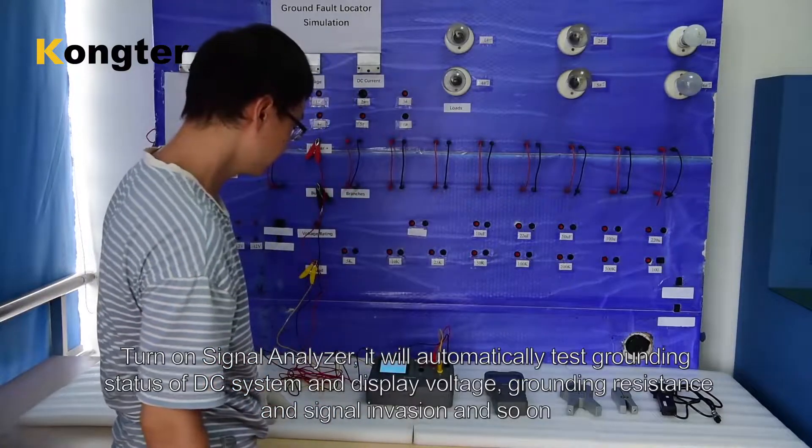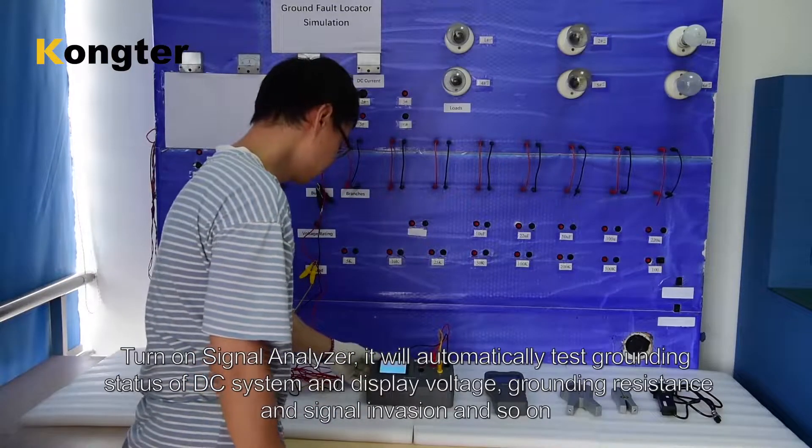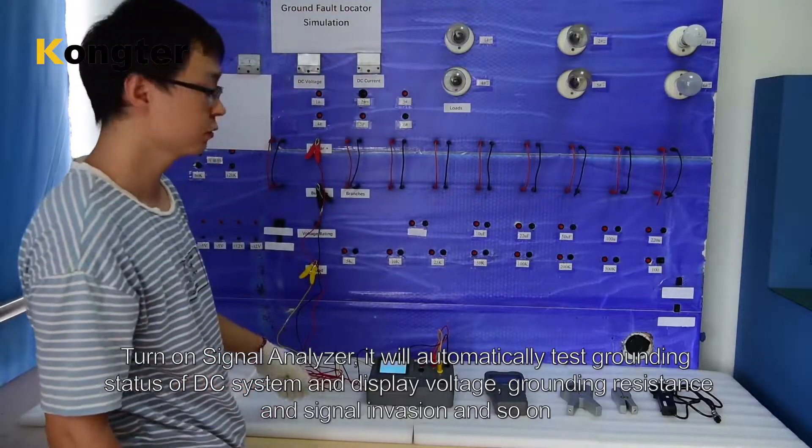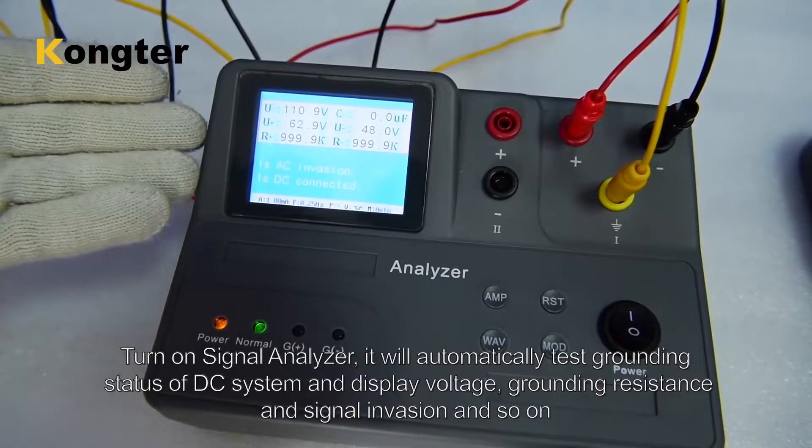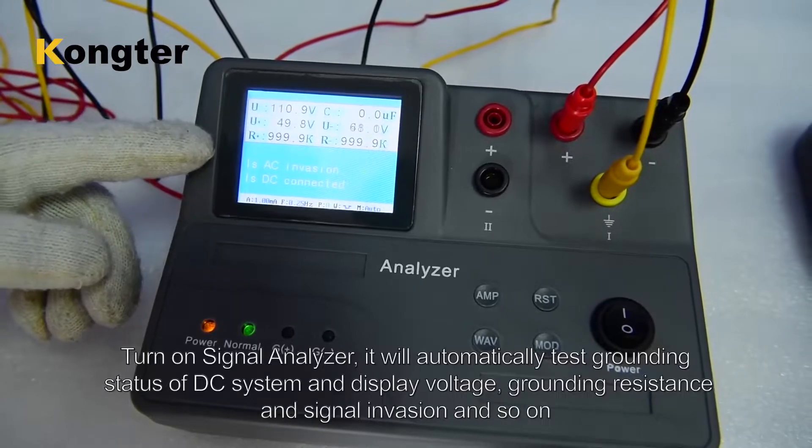Turn on signal analyzer. It will automatically test grounding status of DC system and display voltage, grounding resistance and signal invasion.